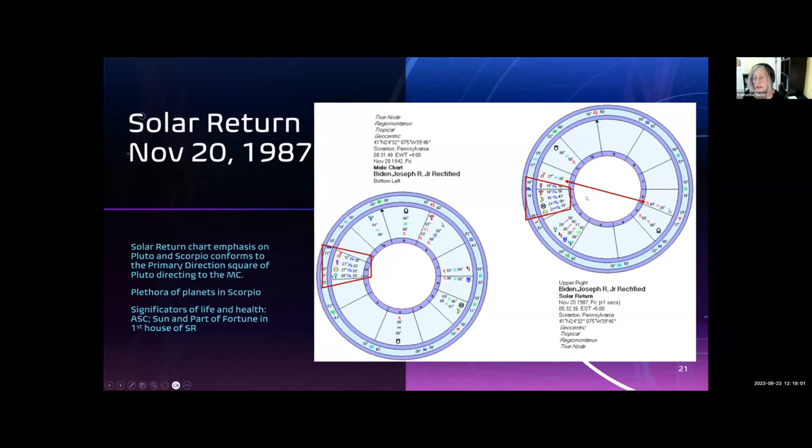In addition, Jupiter, which is the significator of his life, is opposite Mars, which returns to the 12th house natally, big Scorpio. So, this seems to definitely say that that solar return reflects his illness in February.